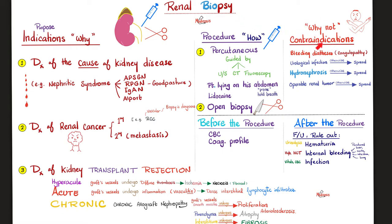When not to perform kidney biopsy — what are the contraindications? If the patient has coagulopathy, meaning the blood cannot clot, there is a high risk of bleeding, so we will not do it. Urological infections — the needle will spread the infection all over the body. If there is hydronephrosis, the kidney will spread all that fluid, which can lead to infections. Or if there is an operable kidney tumor — if you poke it with a needle, you might spread tumor cells all over the body. Just wait until the surgeon removes the entire tumor; then you can examine it under the microscope.